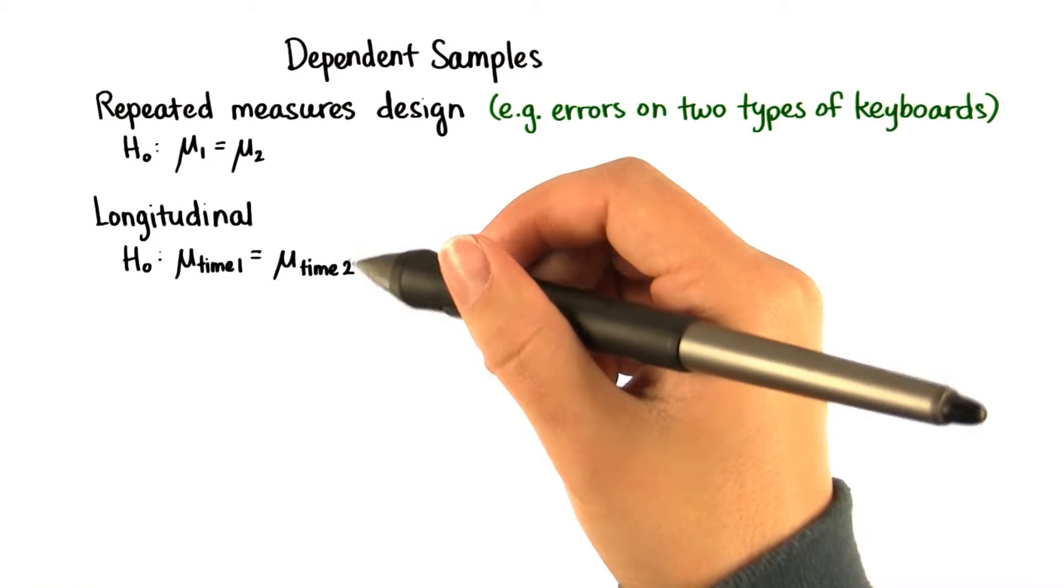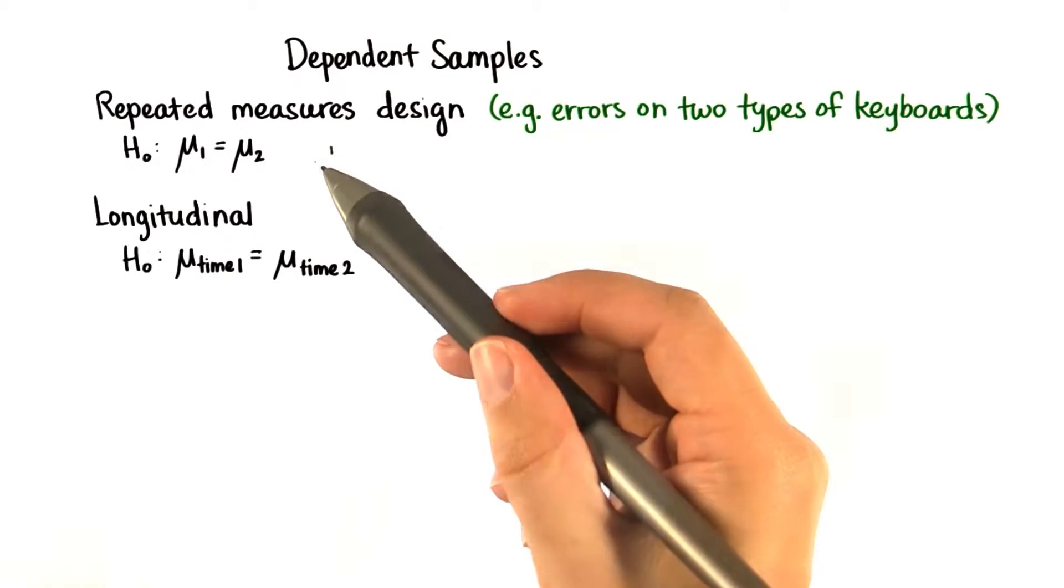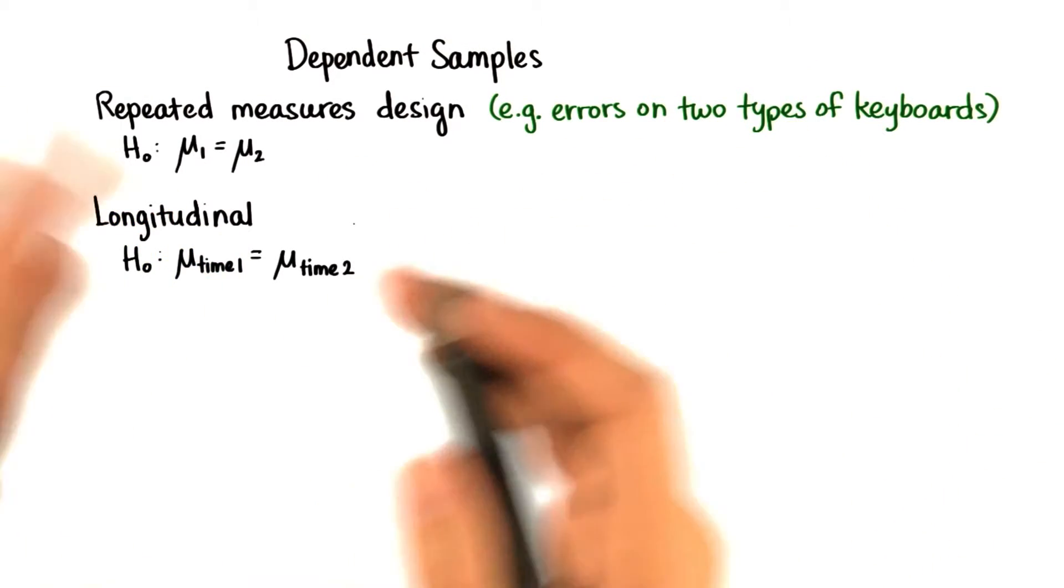The null hypothesis will be exactly the same symbolically as for a repeated measures design. Only with this design, we're putting a lot of time in between measuring the variables.